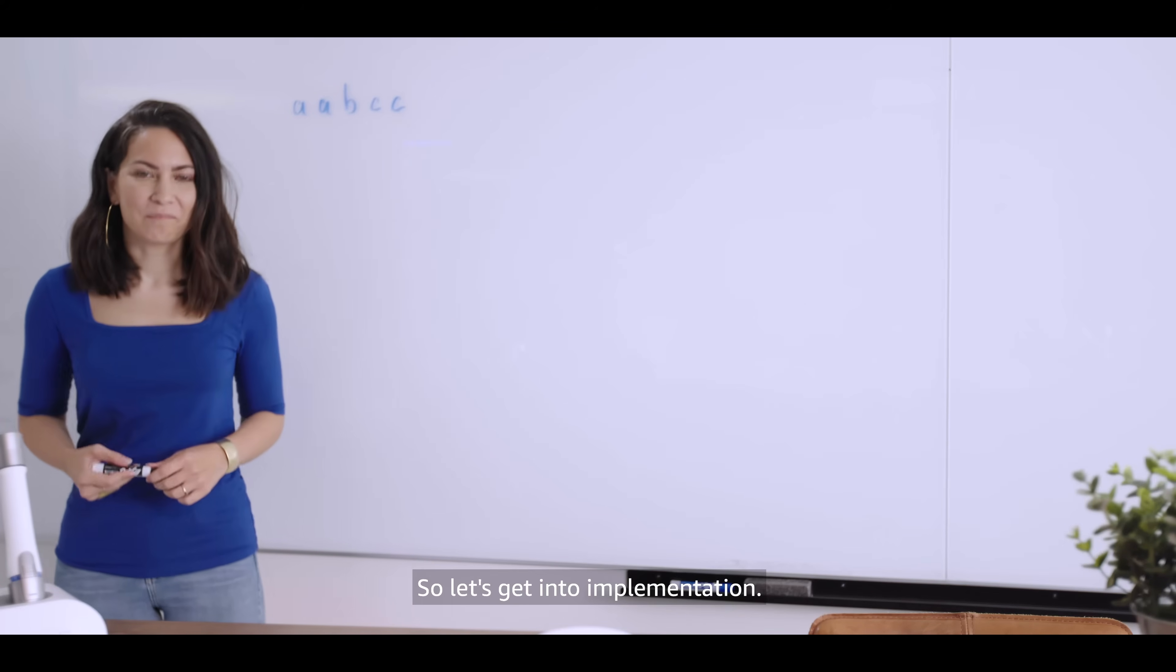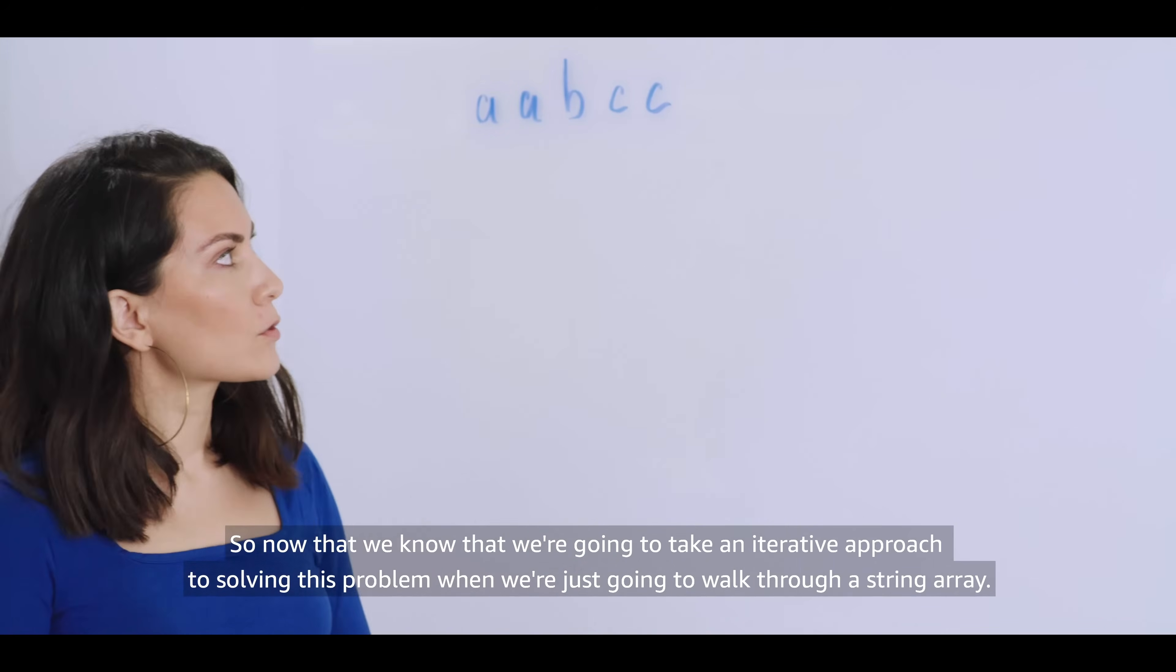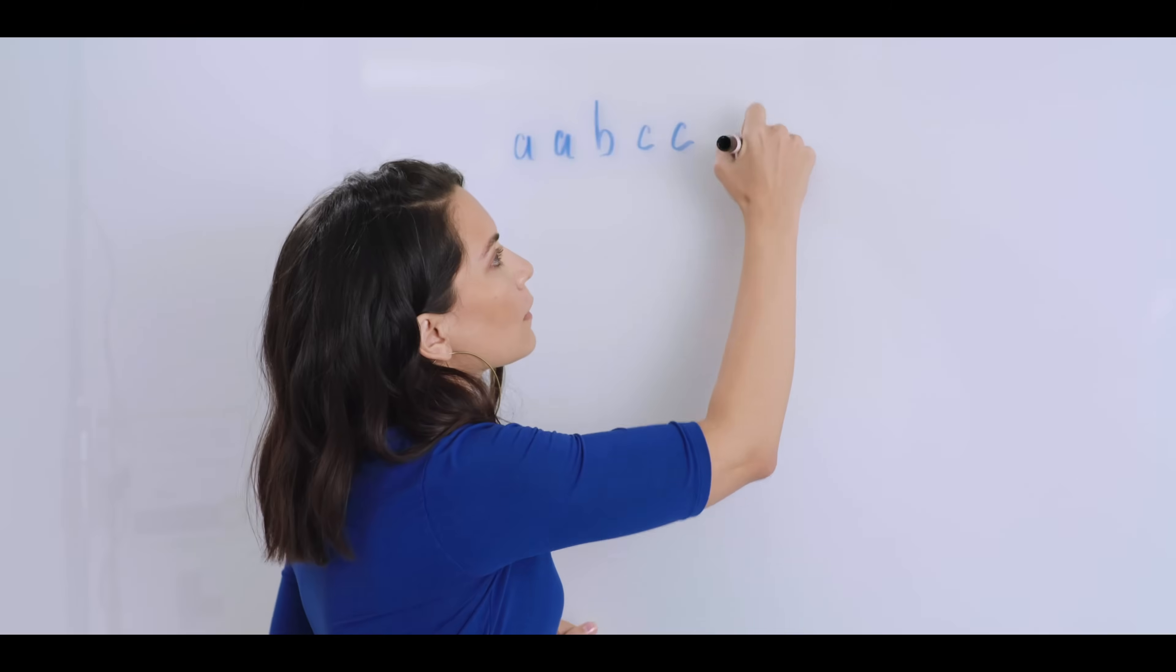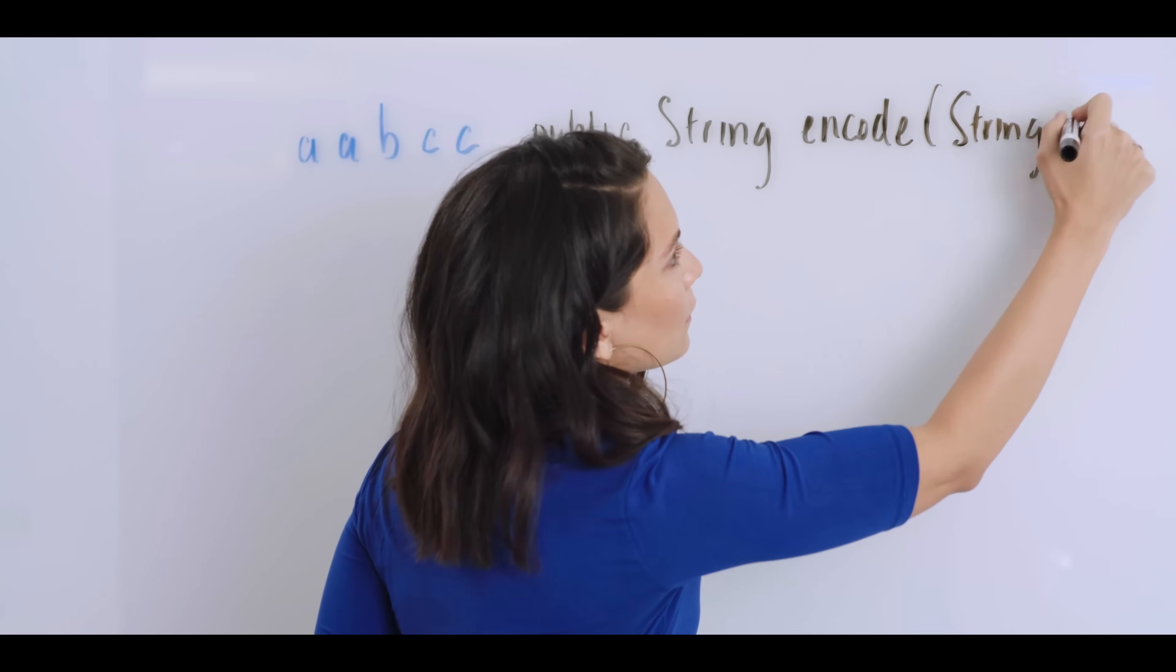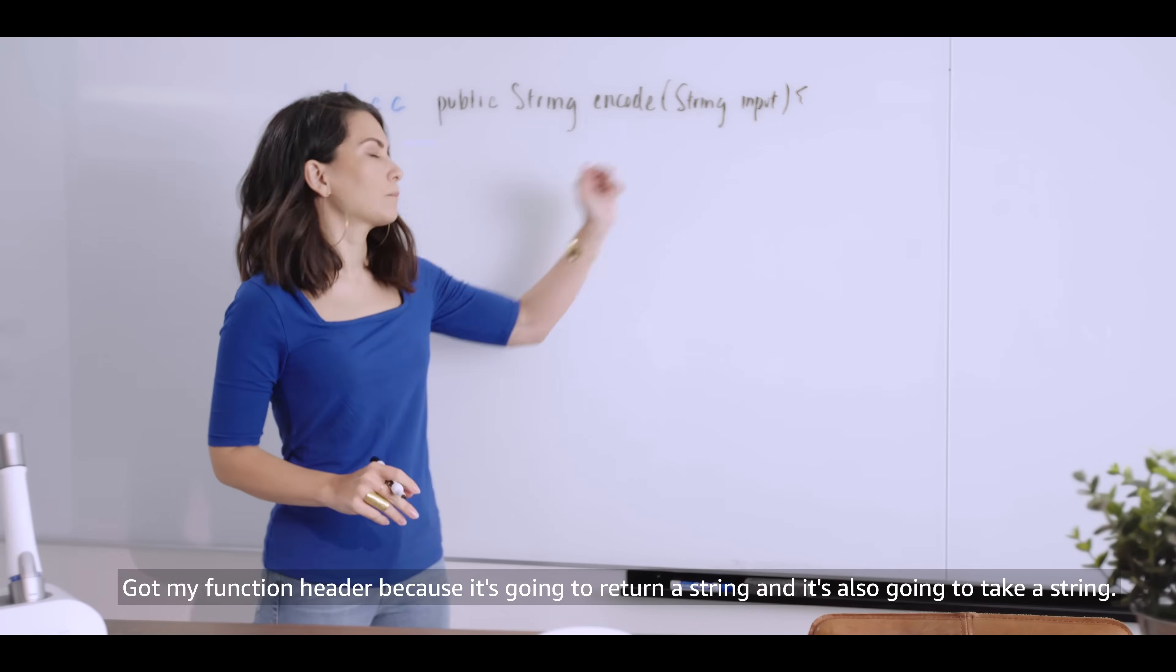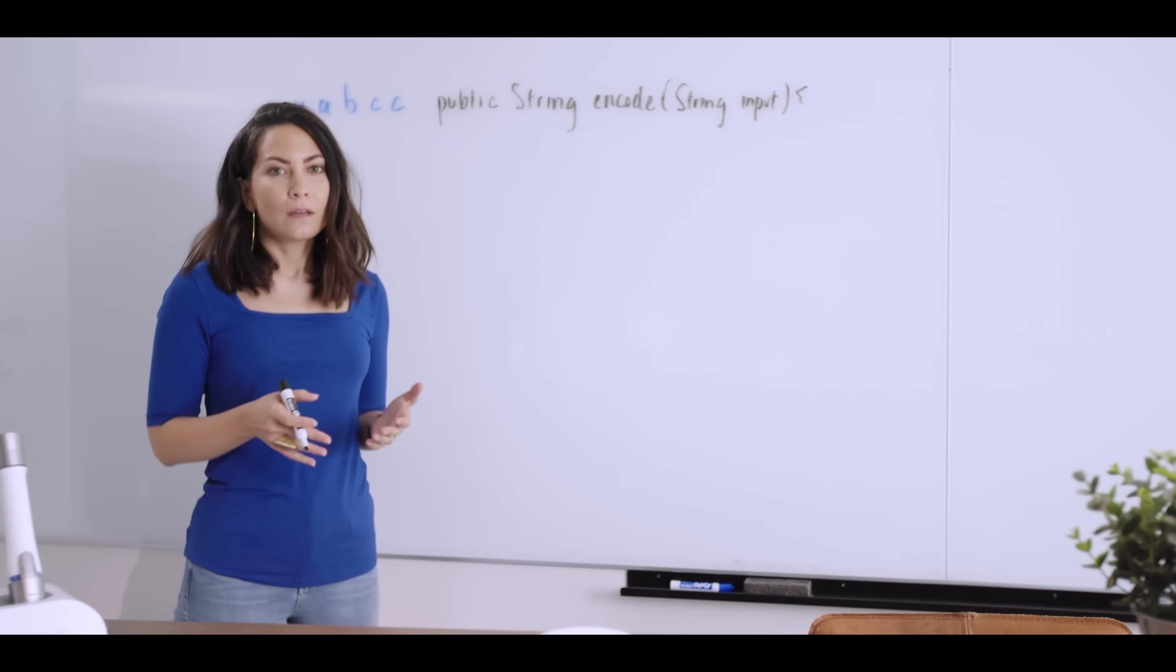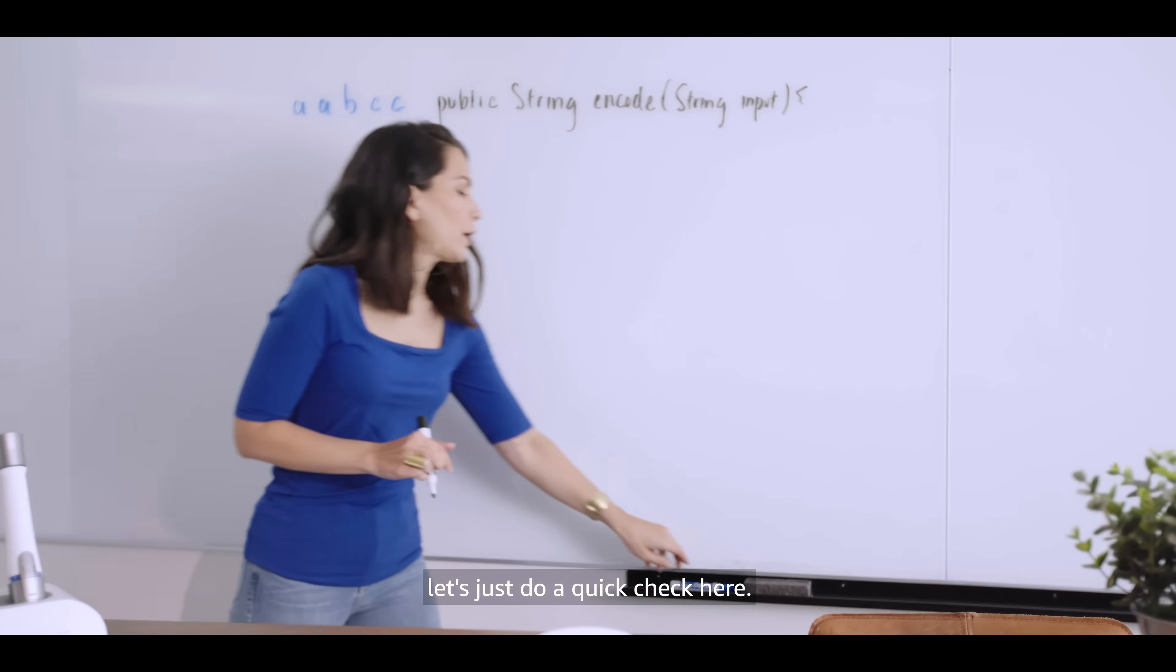So let's get into implementation. So now that we know that we're going to take an iterative approach to solving this problem and we're just going to walk through a string array, let's start by thinking about our inputs and outputs and how we're going to specify the function we're going to write. Now I'll just preface that I'm going to write this in Java. Got my function header because it's going to return a string and it's also going to take a string. So what do I want to do first? Well, we don't generally get very fussy about whether or not your input's validated. But for this case, because we've got a simple input validation that we can do, which is namely is our input null, let's just do a quick check here.